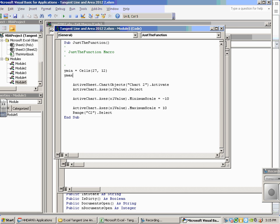Then, you can probably guess what I'm going to type in next. Ymax equals cells. I'm still in the 27th row. But, now I'm M27. That's one column over column 13.